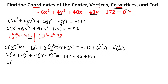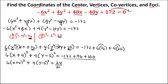So we have 6(x + 4)² + 4(y − 5)² = −172 + 96 + 100 = 24. Since an ellipse always equals 1, we divide all terms by 24 to make the equation equal to 1.